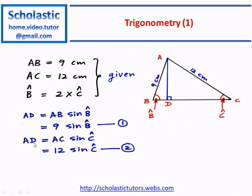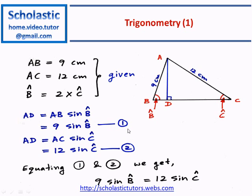Using the other side of the triangle, AC sine C equal to AD. AC in this case equal to 12, and therefore the value of AD equal to 12 sine C, equation number 2. Now we can equate equation 1 and 2 to get 9 sine B equal to 12 sine C.